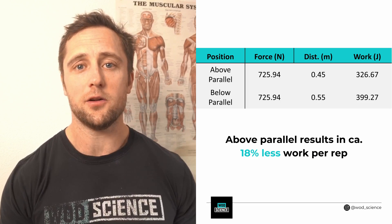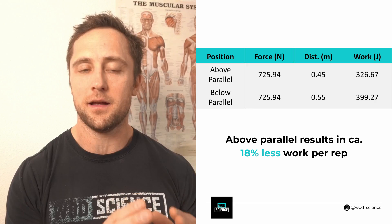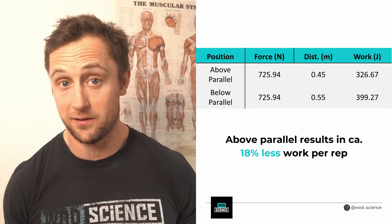So because of simple physics the total work for one rep will be much less when a person fails to squat below parallel. Here I listed out how much less total work the above parallel squatter actually did using the numbers from the example I just explained we can see that squatting above parallel approximately results in 18 percent less energy expenditure per rep. Something to think about next time when you see a person doing no rep front squats.